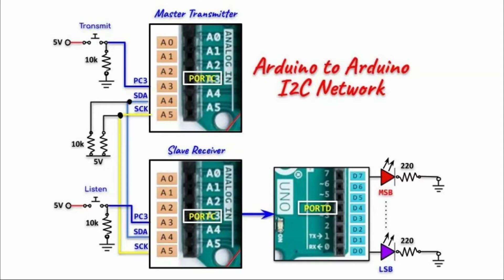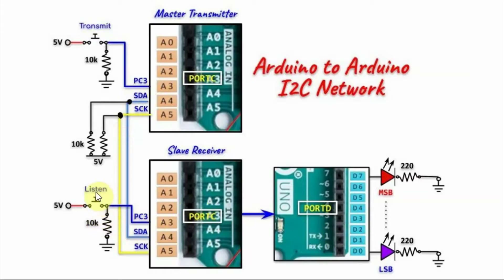In this video, two Arduinos are interfaced to form an I2C network. One Arduino is programmed as a master transmitter and the other as a slave receiver. When the transmit button of the master transmitter is pressed, a byte is sent serially to the slave receiver, which then displays the byte on port D. The listen button of the slave receiver is then pressed to enable the slave to listen to the bus for another incoming byte from the master transmitter.